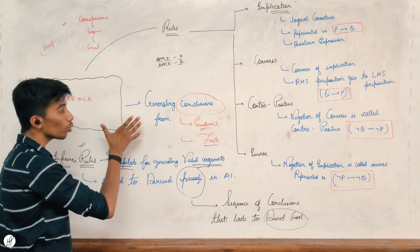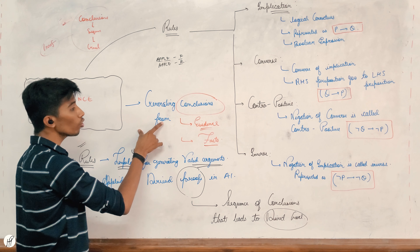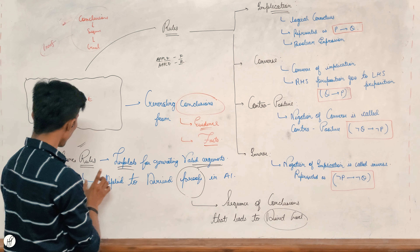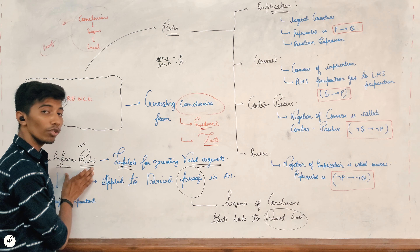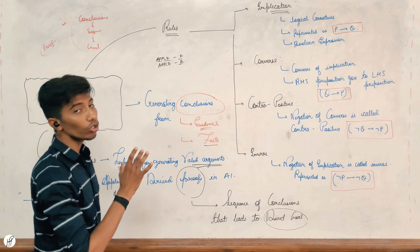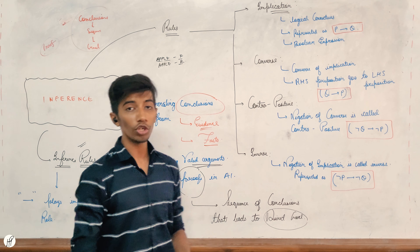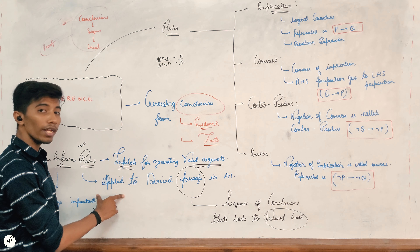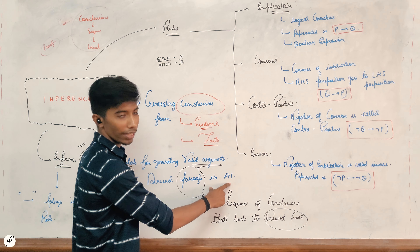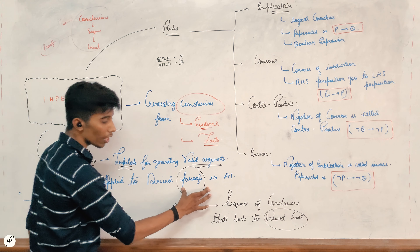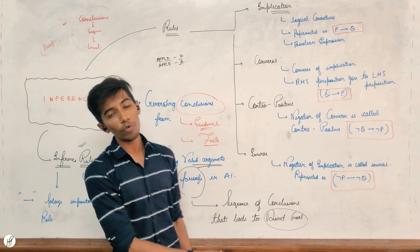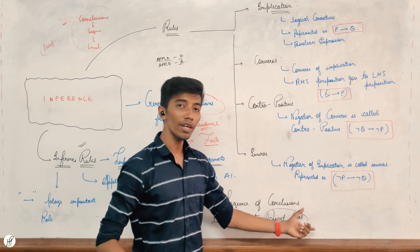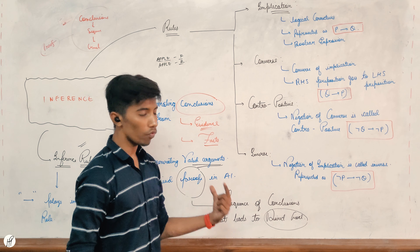If you look at the inference, what is the inference? The inference rules are for evidence and facts. What are the inference rules? The inference rules are known as proof.